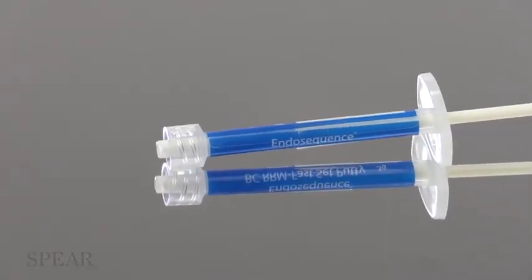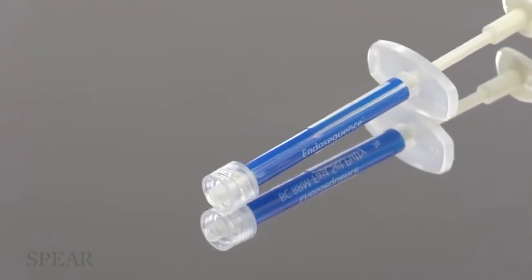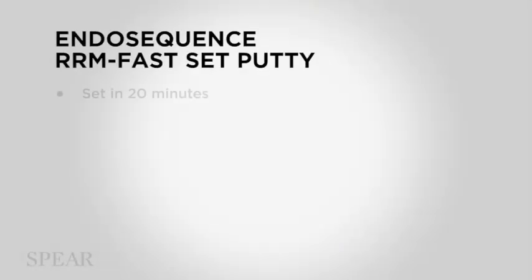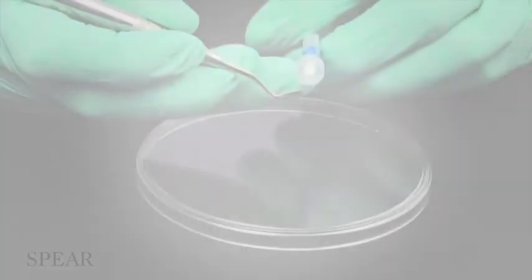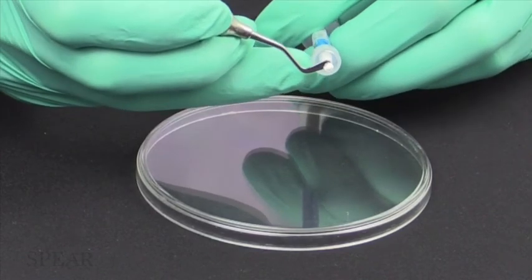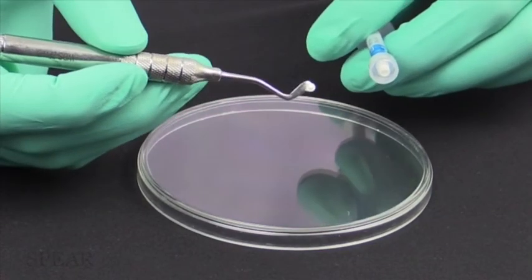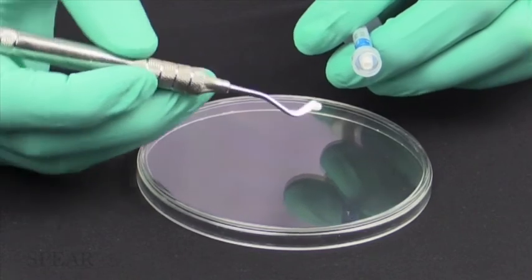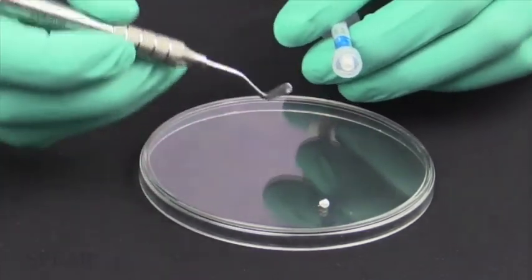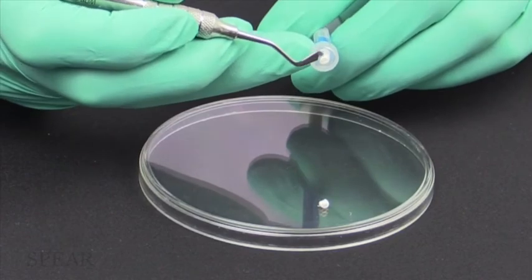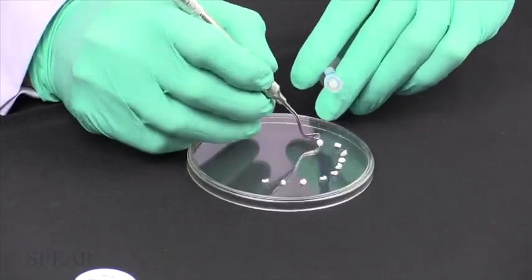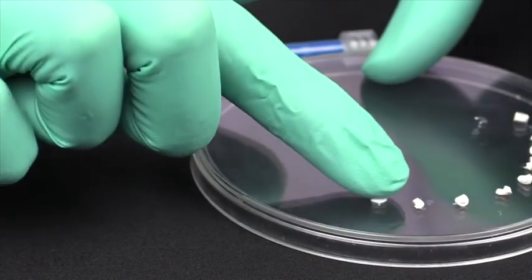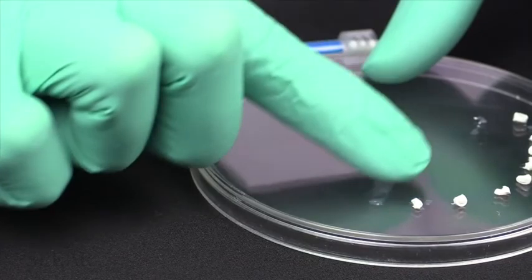This is the SaniDose putty material — the EndoSequence RRM putty fast set, which takes 20 minutes to set. It's fairly easy to use and apply. All you need is a spatula — you take out a small portion from the SaniDose and use your sterile spatula to take a little dose and place it. You can get at least ten doses of putty out of a single SaniDose, depending on the size of your applications.